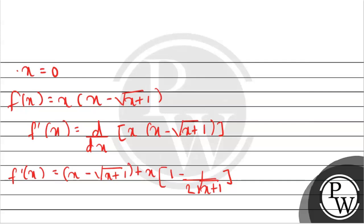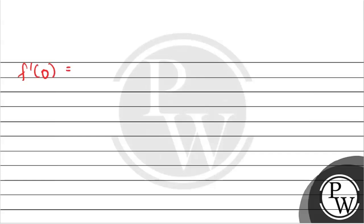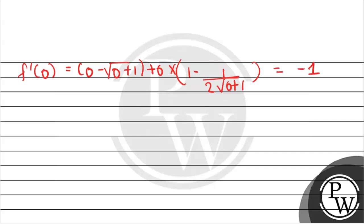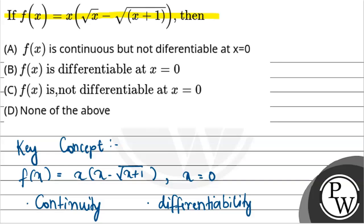Substituting x=0: f'(0) = 0 times (1 minus 1/(2√1)) + (0 minus 1) = 0 + (−1) = −1. Both the left-hand derivative and right-hand derivative at x=0 give −1, implying f(x) is differentiable at x=0. Since f(x) is both continuous and differentiable at x=0, the correct answer is option B: f(x) is differentiable at x=0.